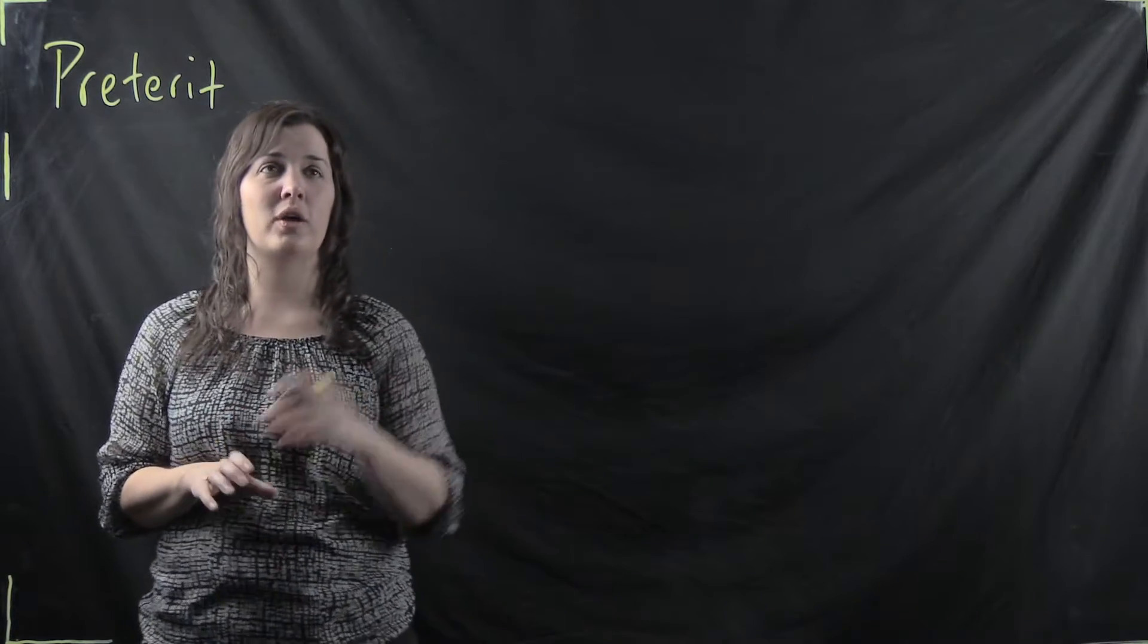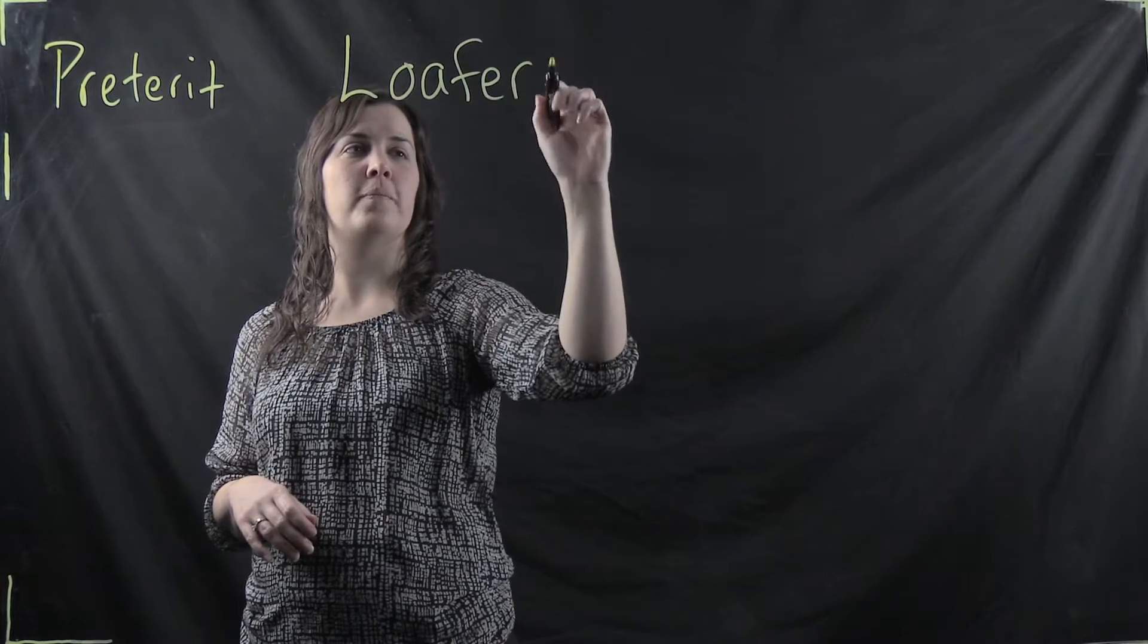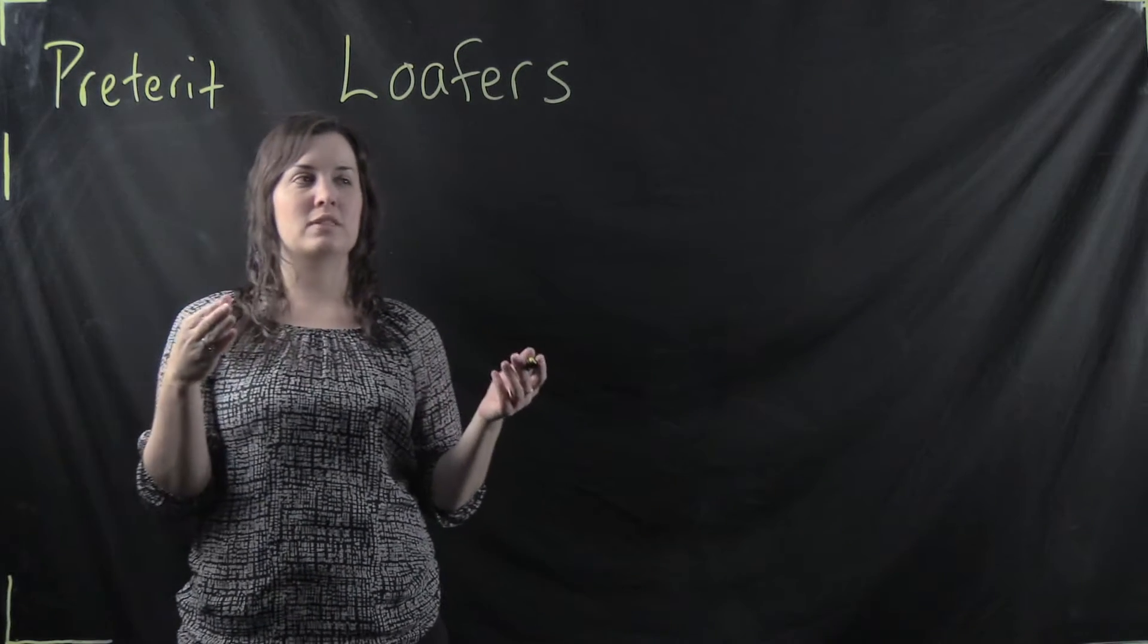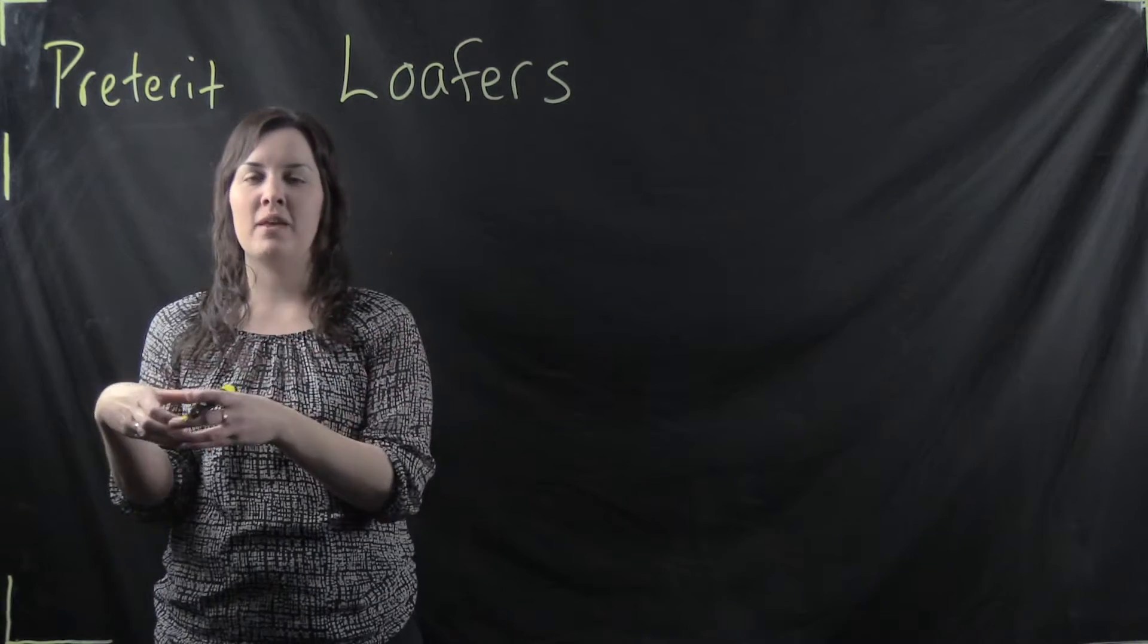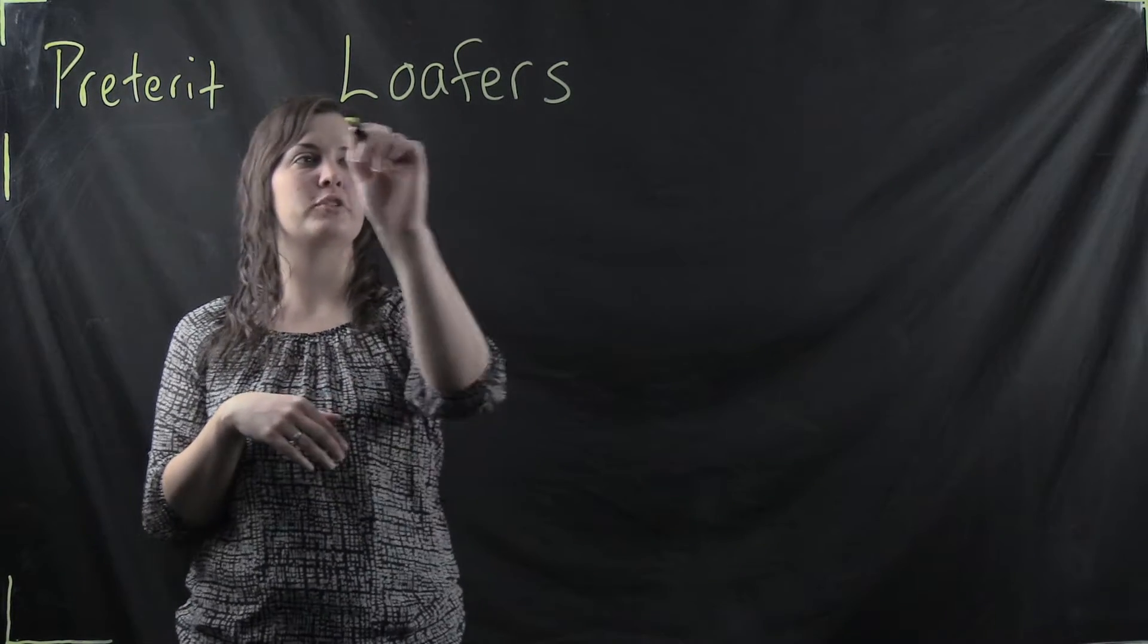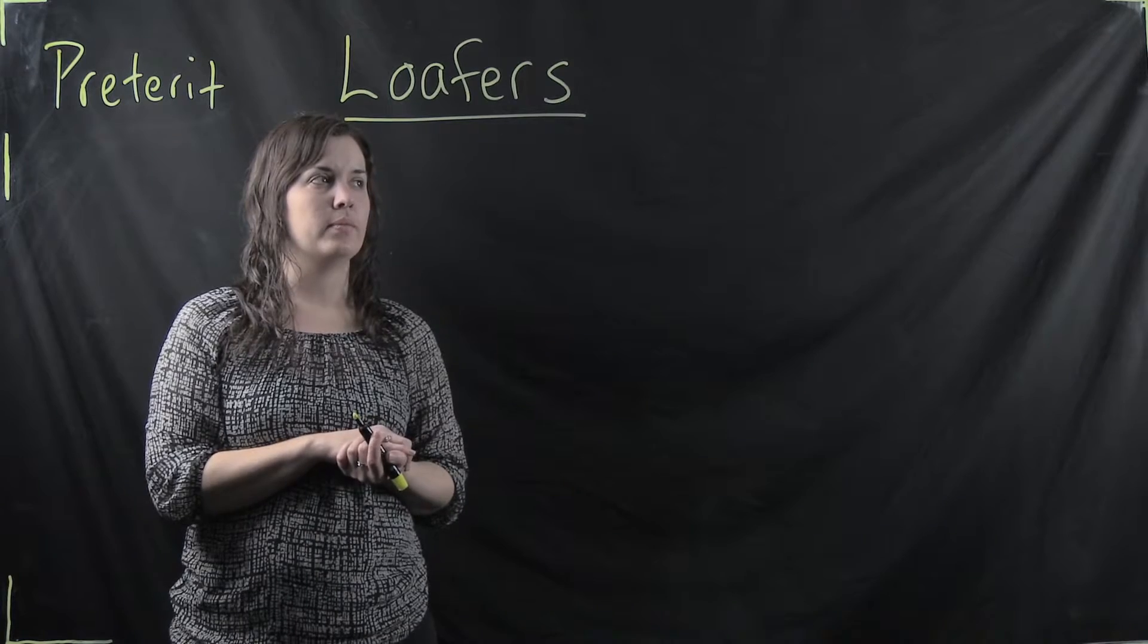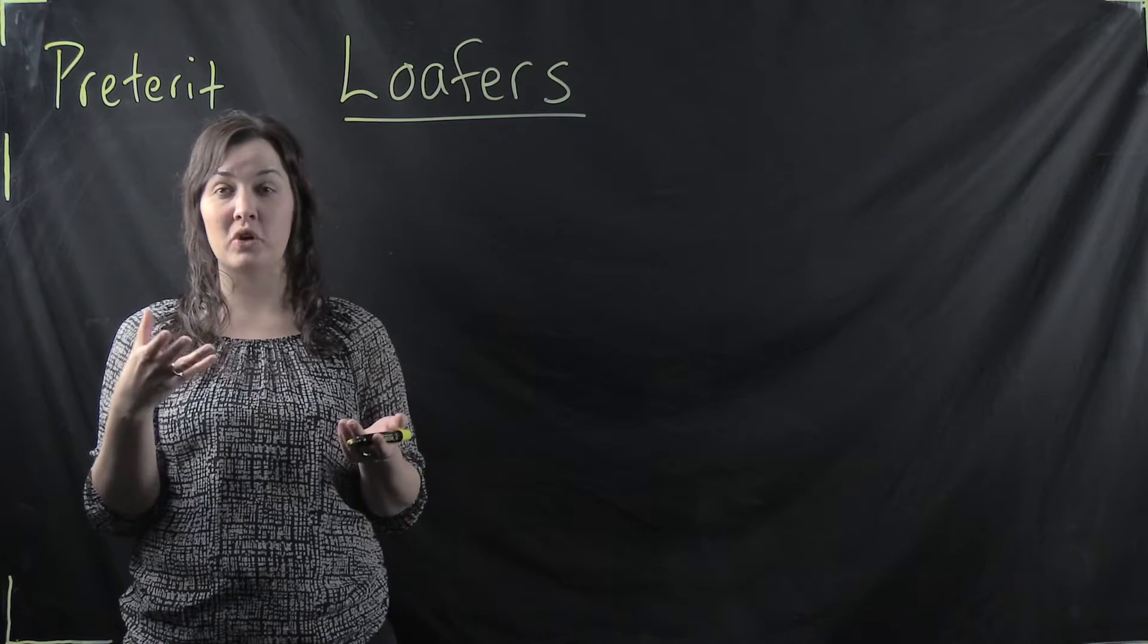The second group we call the loafers. Now I'm referring to these groups of verbs as irregular verb gangs. It's just kind of a silly way of saying these are verbs that don't follow the rules. They stick together in groups and they behave poorly, so that's why we call them gangs. So now we have the loafers and the word loafer is a variation on the word we use for stem changing verbs in the present tense which is a boot verb.